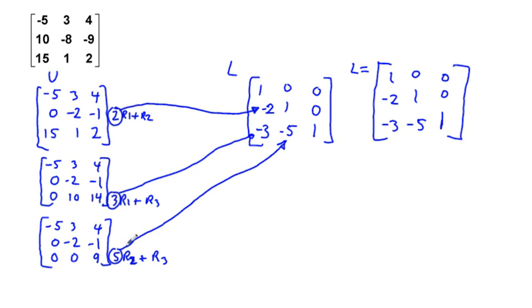And our U is going to be what remains here. So we're going to say U is equal to -5, 3, 4, 0, -2, -1, and then 0, 0, 9.